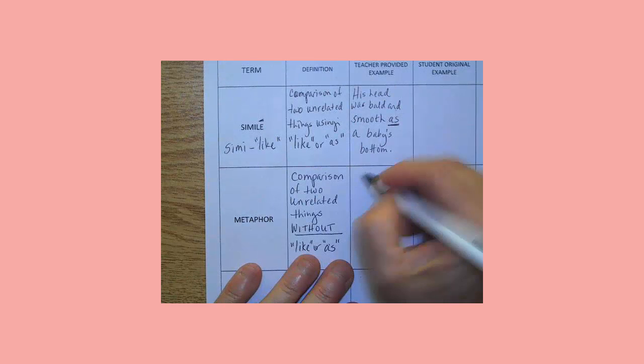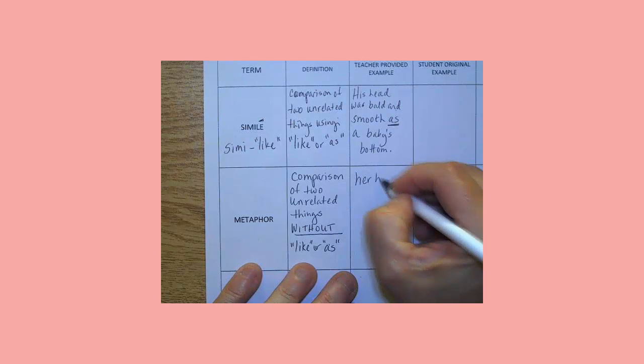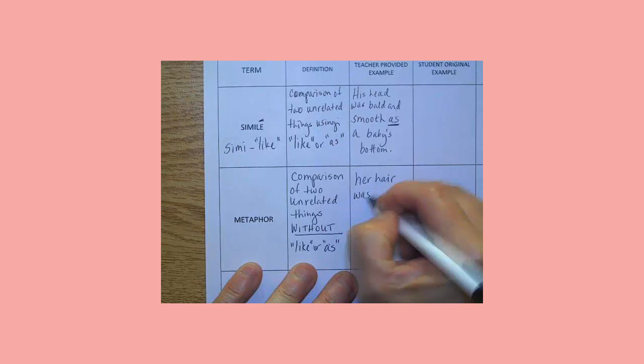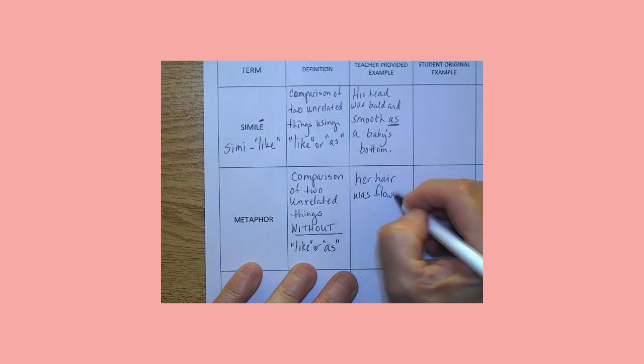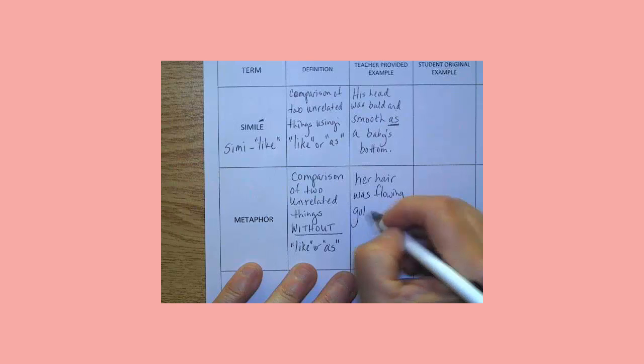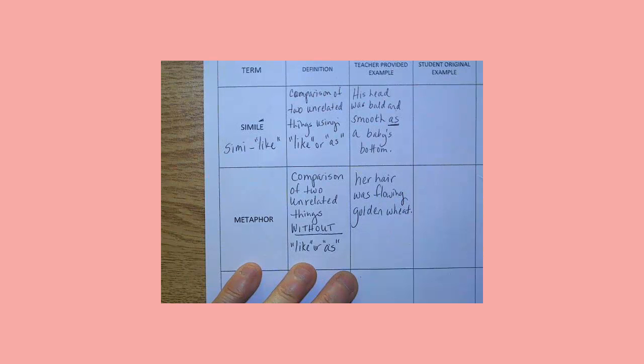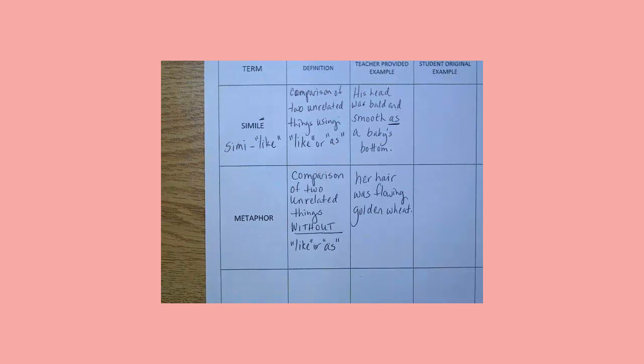Here's a metaphor. Her hair, bless you, was flowing golden wheat. Now obviously her hair is not really wheat, but by comparing it to wheat, we can get a visual picture of what color it was. What color her hair was.